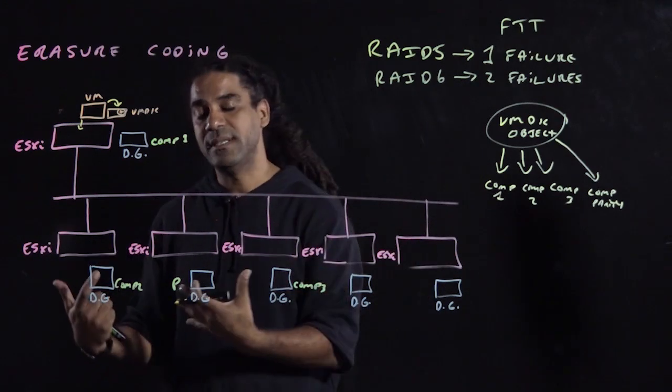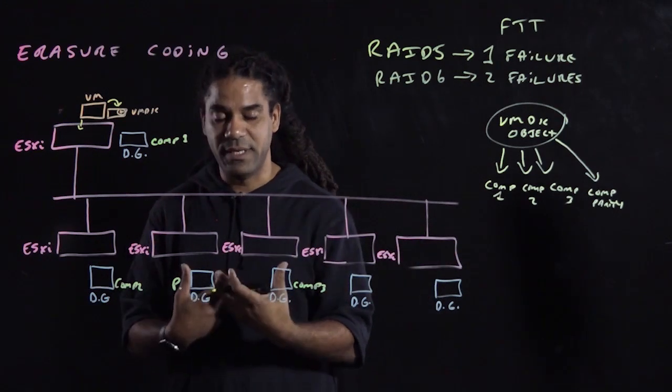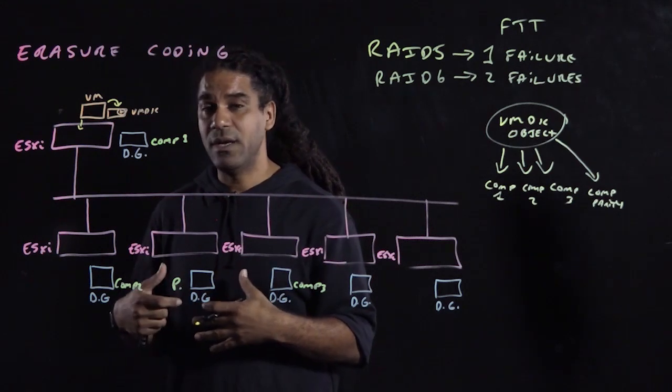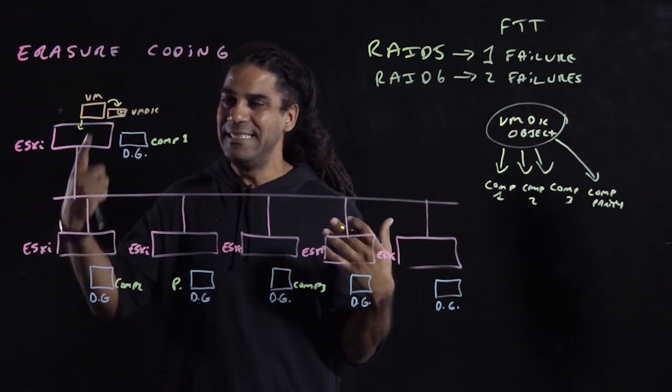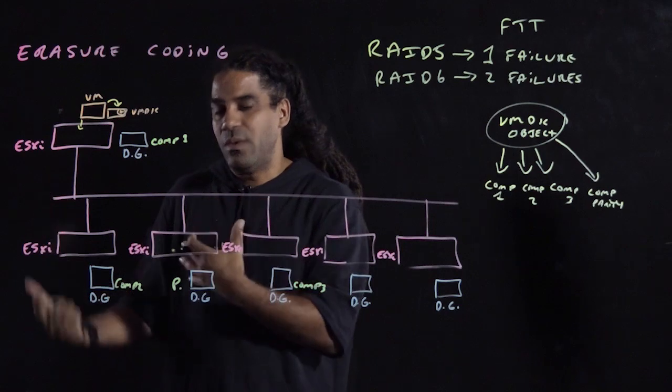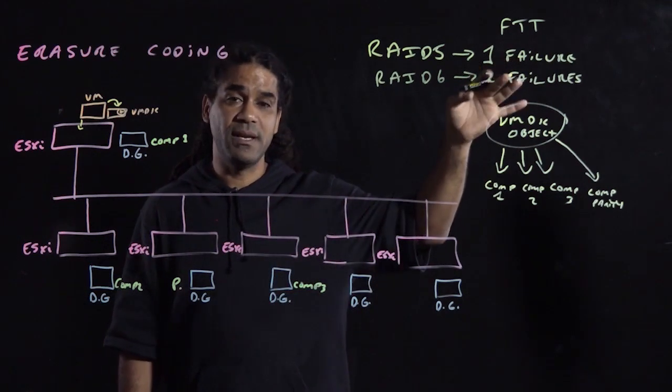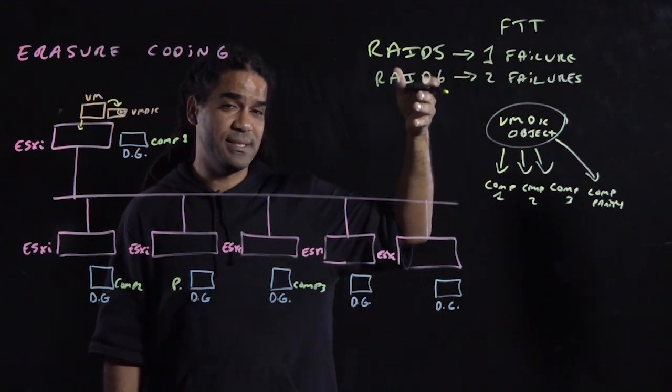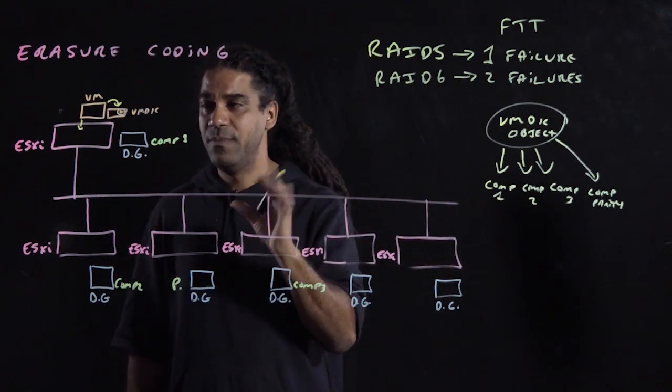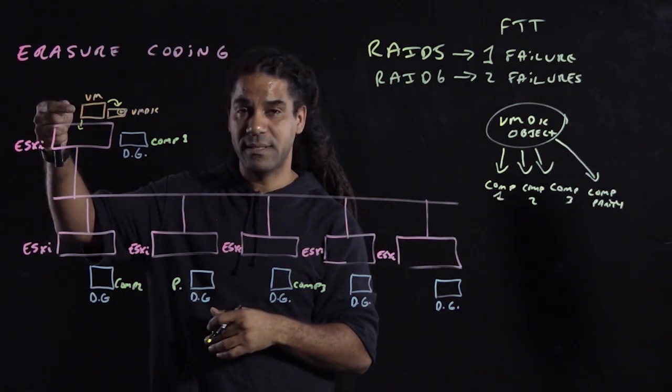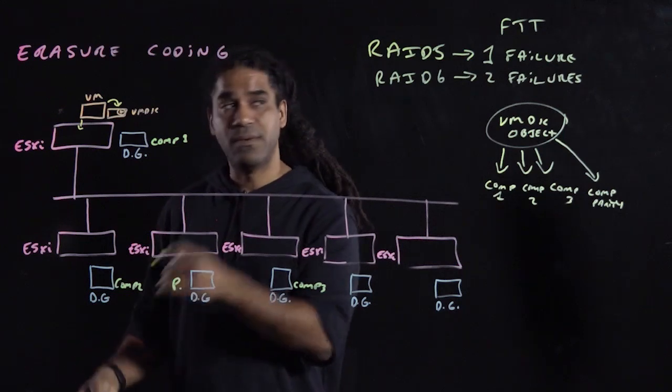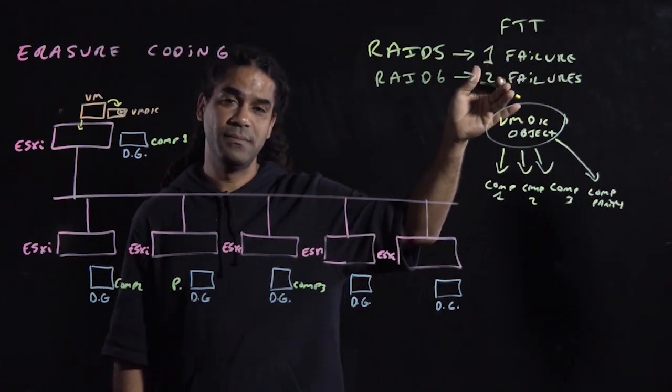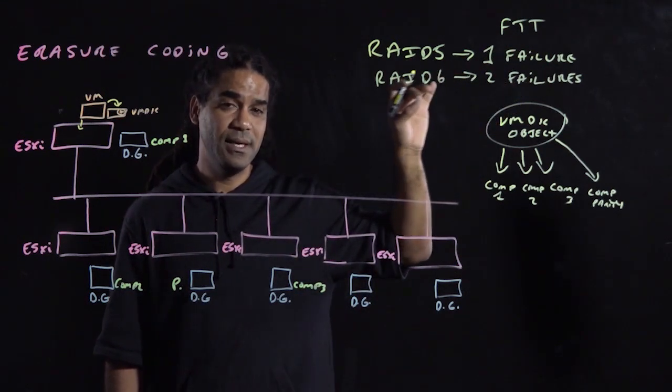If now, and this is one of the beauties about vSAN with its PBM process, is that two weeks later, you realize that VM, actually we did it wrong, we don't need an FTT of 1, we need an FTT of 2 with RAID 6. All you need to do is go to that VM's policy, change it from FTT of 1 to FTT of 2, change the method to RAID 6, click OK.